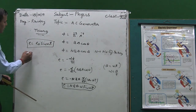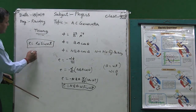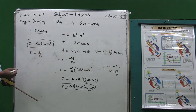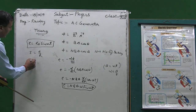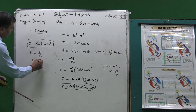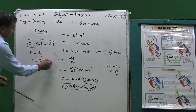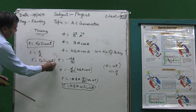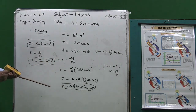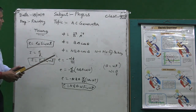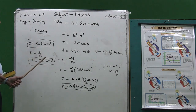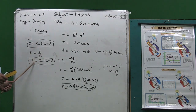The AC current is given by E divided by R, where R is the external load, so i equals i₀ sine(omega t). This is the form of AC current. So this generator gives AC voltage and AC current.